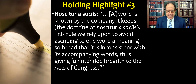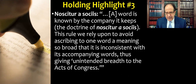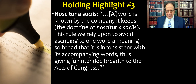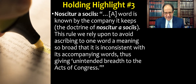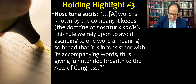The majority then moves on to the noscitur canon. Here's how they explain it: 'A word is known by the company it keeps' — they call this the doctrine of noscitur a sociis. 'This rule we rely upon to avoid ascribing to one word a meaning so broad that it is inconsistent with its accompanying words, thus giving unintended breadth to the acts of Congress.' Part of what's interesting is that they connect this old Latin canon to separation of powers — courts would be reading a statute to cover far more things than Congress intended if they don't apply this canon.